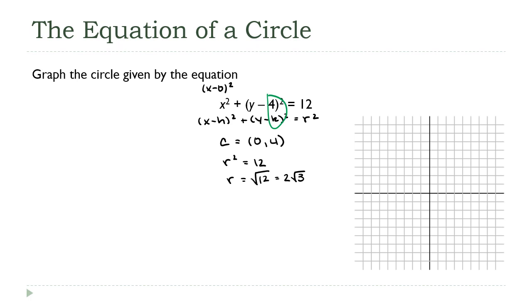Now, you can go to your calculator here if you like. The square root of 3 is about 1.7. So 2 times that is going to give us approximately 3.4.